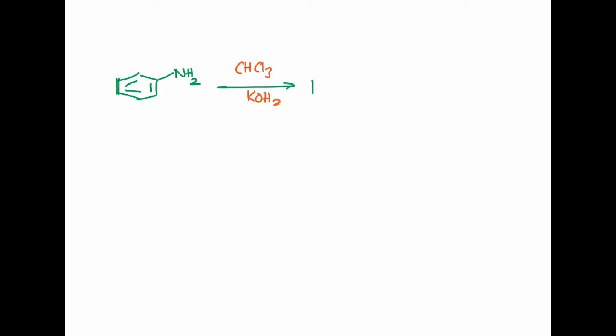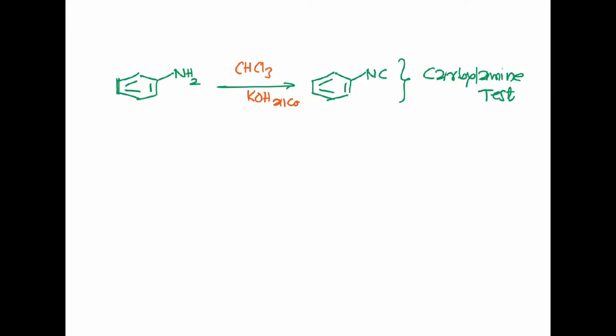Can we do the Reimer-Tiemann reaction on aniline? No, because aniline is too reactive. When aniline is treated with chloroform and alcoholic KOH, instead of giving the aldehyde product, it gives phenyl isocyanate. This reaction — chloroform plus KOH with a primary amine — is known as the carbylamine test, used to identify primary amines. So only phenol undergoes the Reimer-Tiemann reaction.